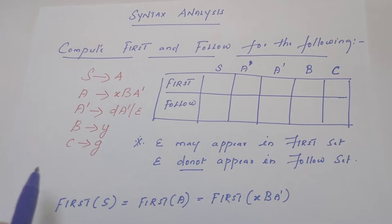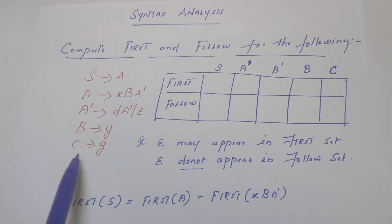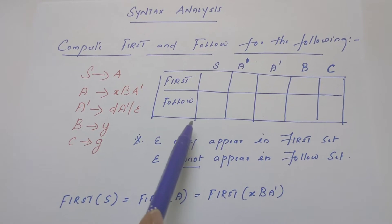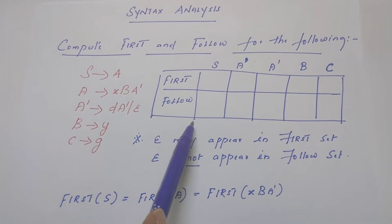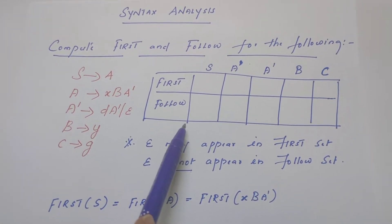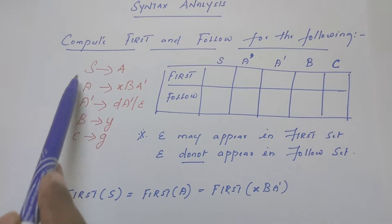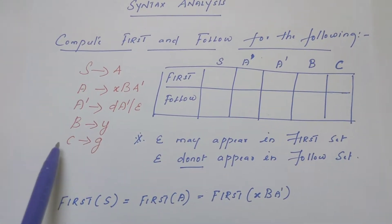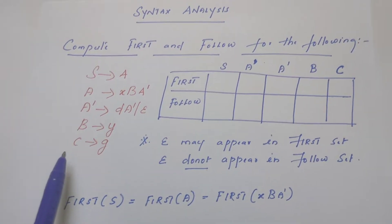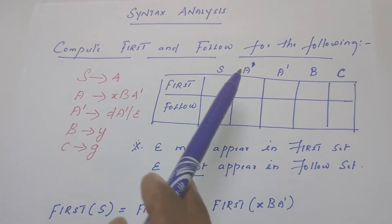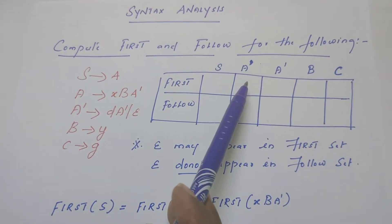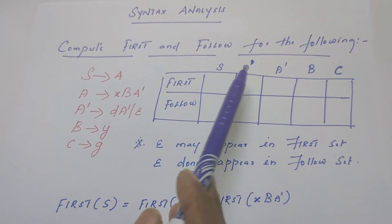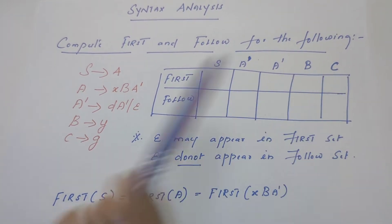I have taken an example grammar here. This is a grammar and I have built a table here for which symbols we are going to compute first and follow. For all the non-terminals — what is given on the left hand side or head of the production rule — for every symbol, we are going to find out first and follow. Yes: A, A dash, B and C.